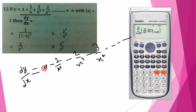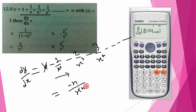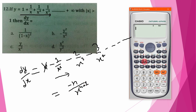The general term from the column is: the key is a minus n divided by x to the power n plus one. So the general term is minus n divided by x to the power n plus one, where n is greater than one.